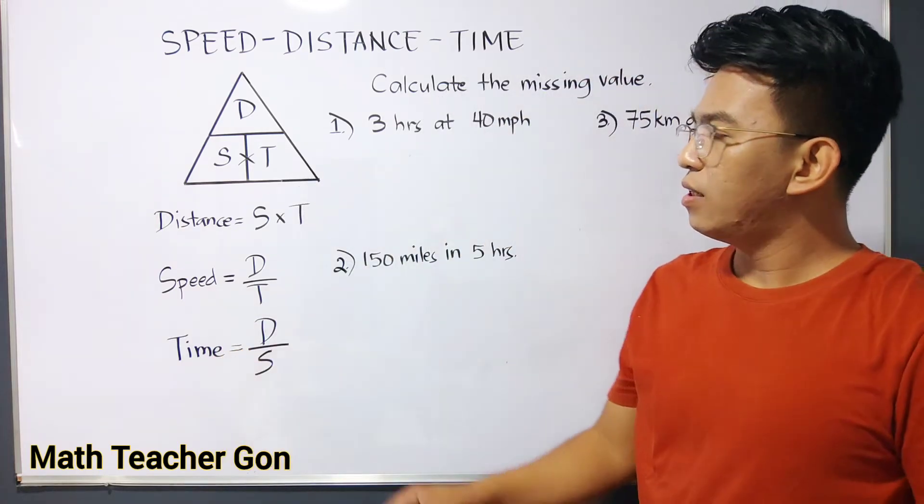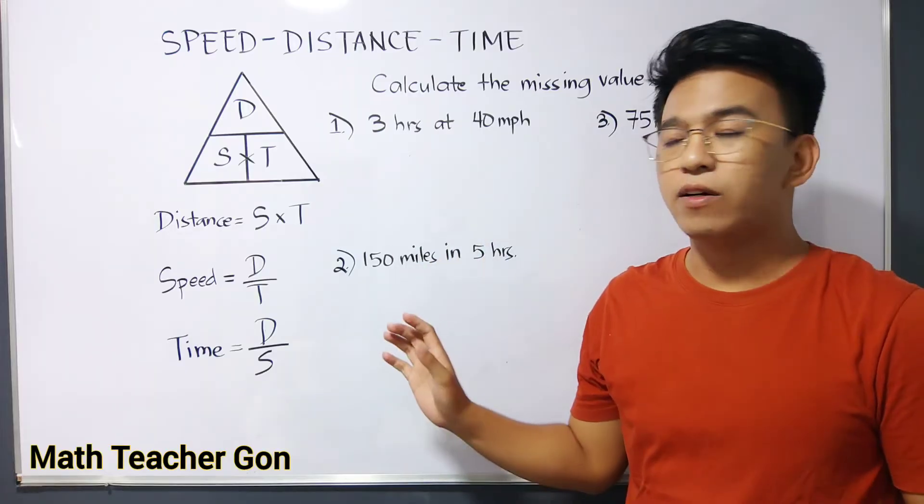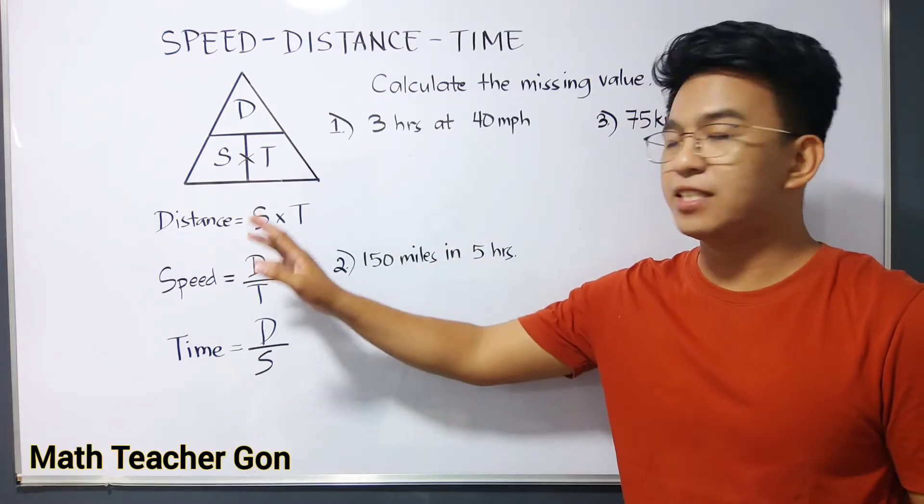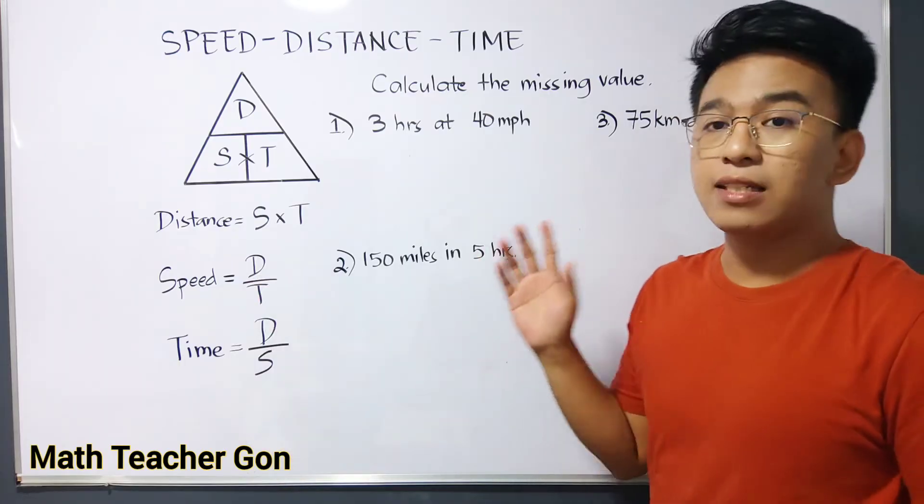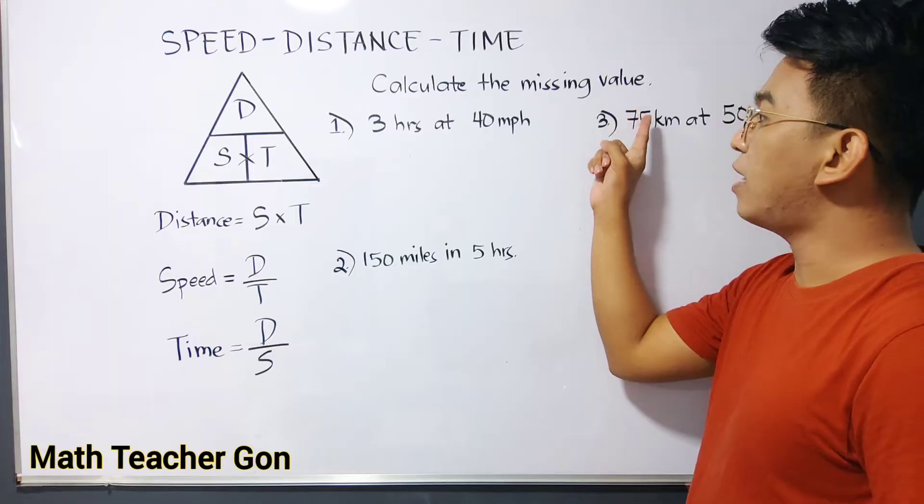Now, since we are done figuring out or deriving the formula for the distance, speed, and time, let's go with these given examples. Calculate the missing value.